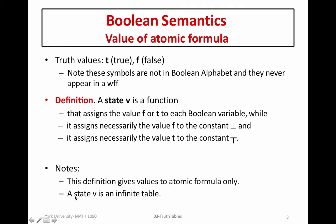Also note that a state can be represented by an infinite table. We can think of a function as a table — if you think about graphing a function, you put the x values on one side, the y values on the other, and that represents your function. This table is infinite because the state assigns a truth value to every Boolean variable, and recall that we have infinitely many Boolean variables, since we use members of the alphabet P, Q, R with infinitely many possible subscripts or primes.